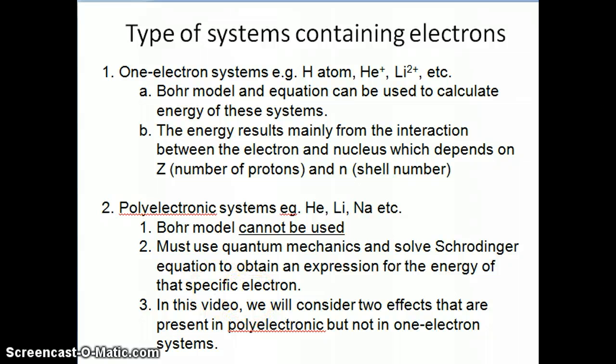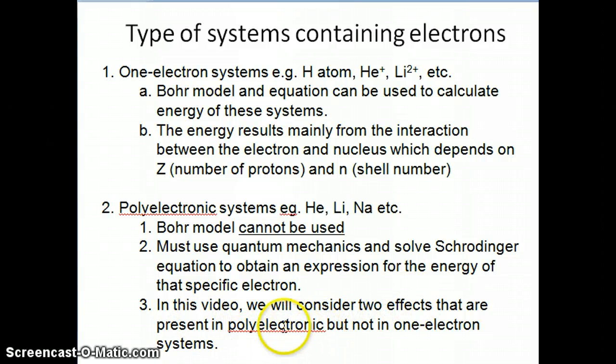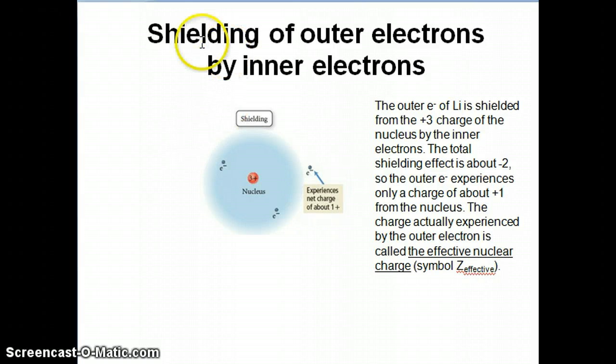In this class, we don't really have the mathematical sophistication to make these calculations. But we can still understand the basis of this calculation by considering a couple of effects that are present in polyelectronic systems but not in one-electron systems. The first one I want to talk about is something called shielding of outer electrons by inner electrons.